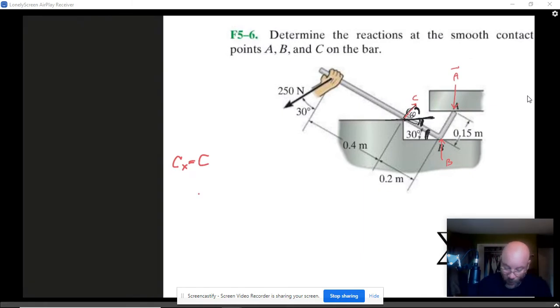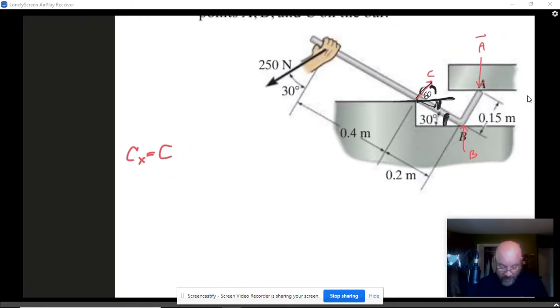Now that we know that, we can say that CX is going to be C times the cosine of 60, and CY will be C times the sine of 60.